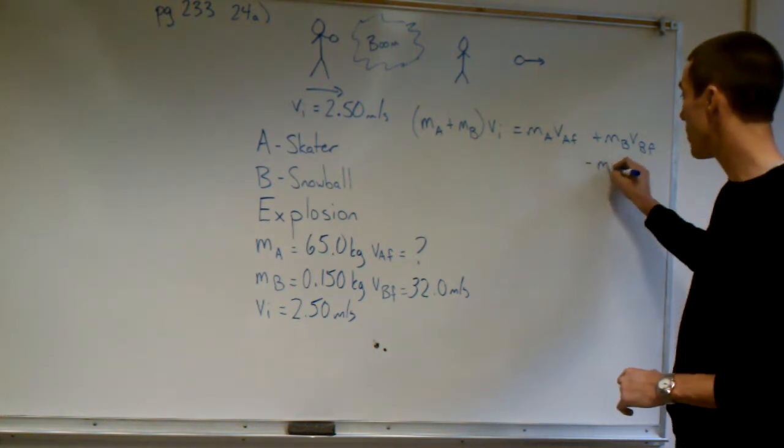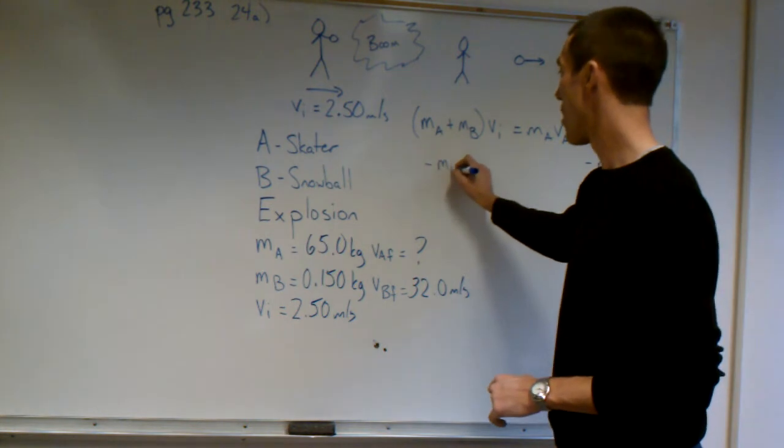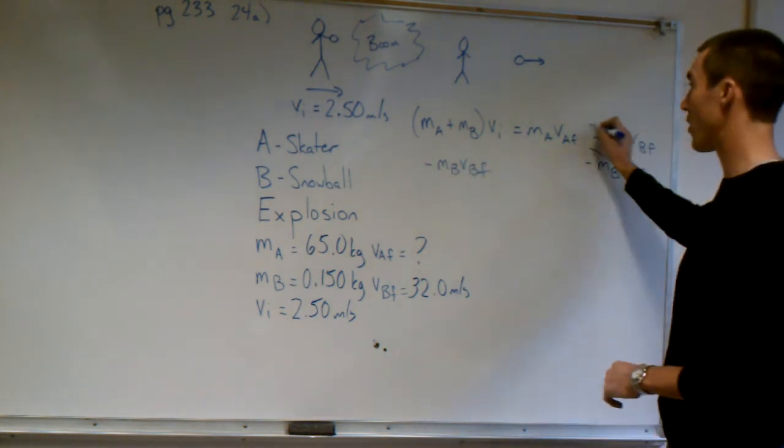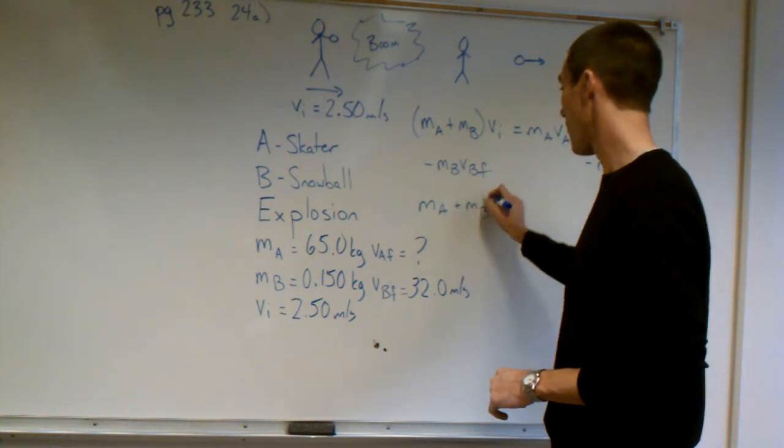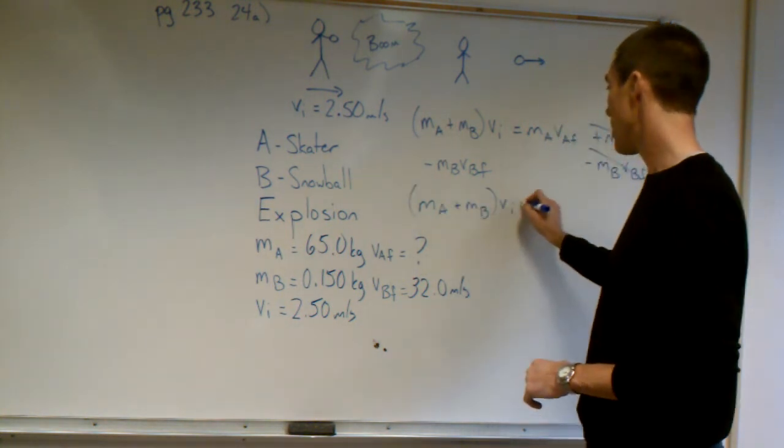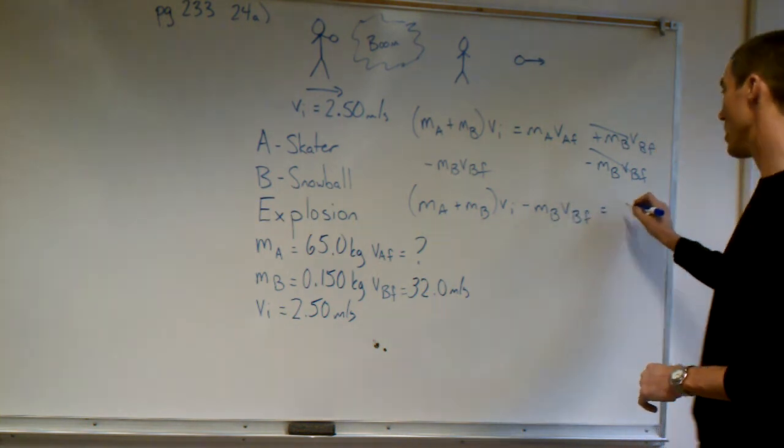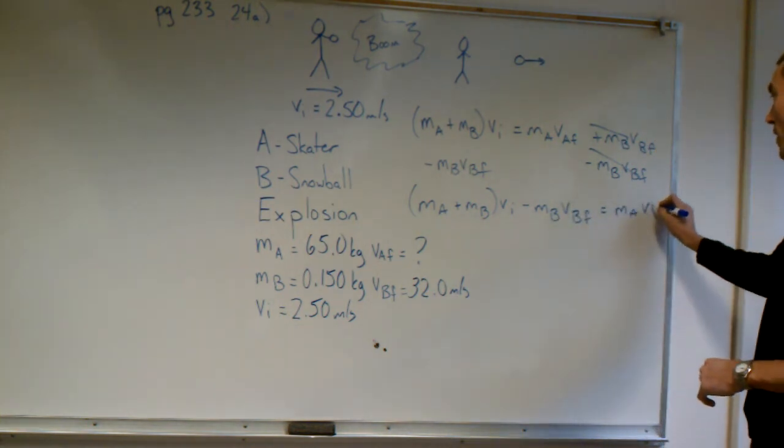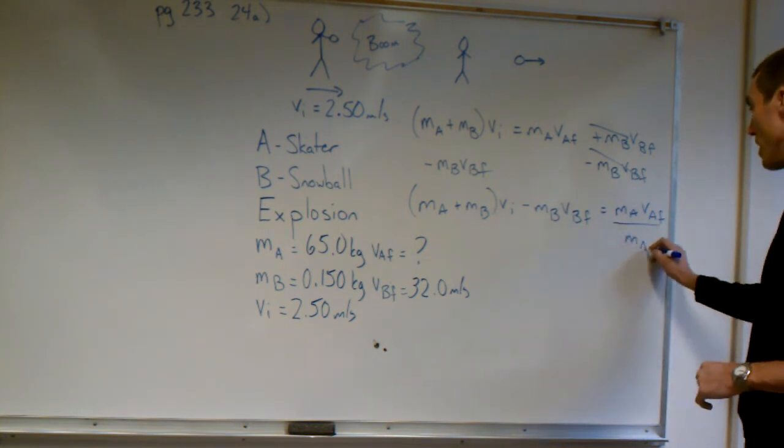So we subtract MBVBF to both sides. We cancel the right side. We're left with MA plus MB times VI minus MBVBF equals MAVAF. You divide both sides by the mass of the A object.